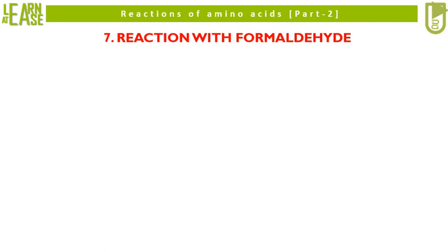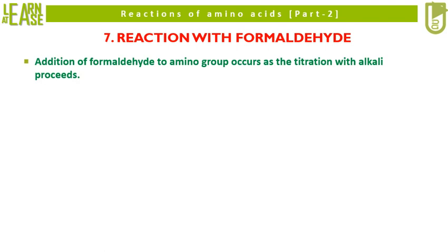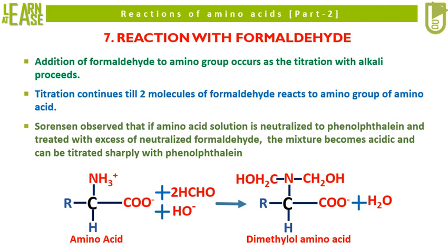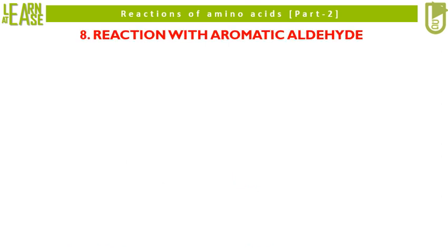Now I will explain the seventh reaction, that is reaction with formaldehyde. Addition of formaldehyde to amino group occurs as the titration with alkali proceeds. Titration continues till two molecules of formaldehyde react with the amino group of amino acid. Sorenson observed that if amino acid solution is neutralized to phenolphthalein and treated with excess of neutralized formaldehyde, the mixture becomes acidic and can be titrated sharply with phenolphthalein. Thus the positive charge on the amino group of amino acid can be completely masked by making it react with formaldehyde, where amino acid gets converted to dimethylol amino acid, which is acidic in nature and acts as a true acid and not like a zwitterion.